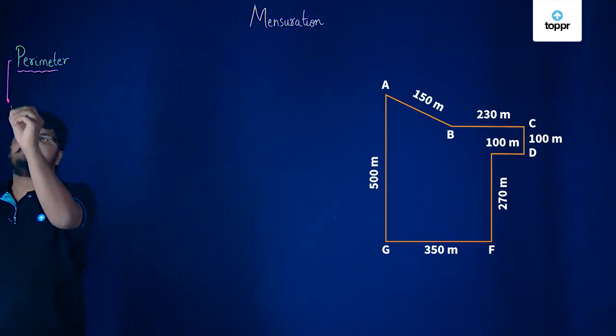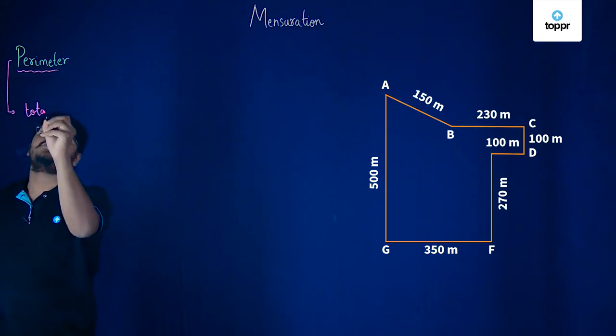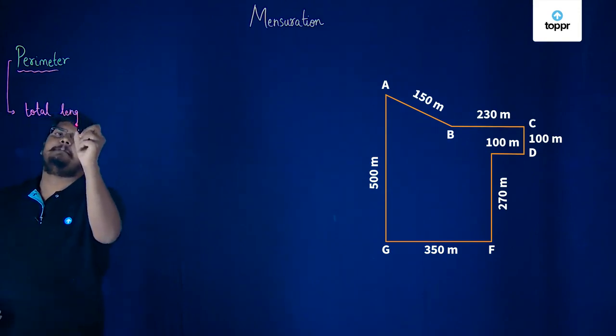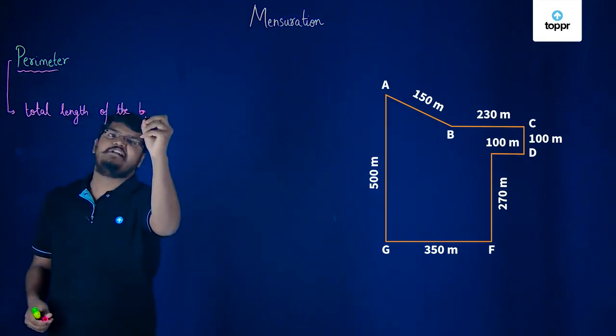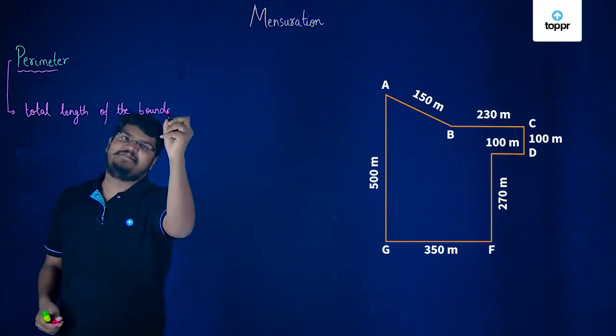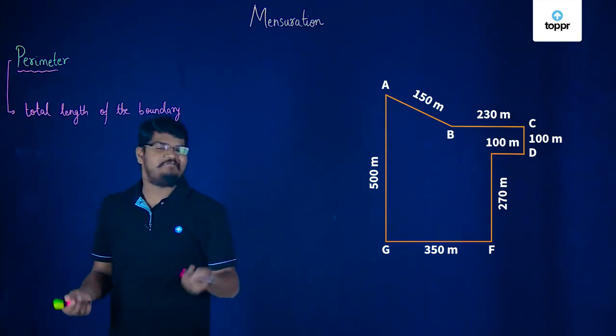Well, she told me that this perimeter is actually the total length of the boundary of a closed shape and the only thing I could understand was closed shape because a closed shape it is closed.